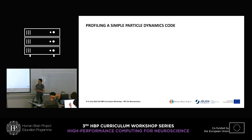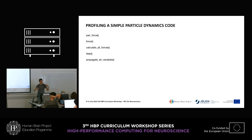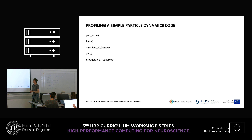Let's look at a brief example. This is a code that simulates some interacting particles — this could be the planets in our solar system, or atoms and electrons in a classical model. We have a bunch of particles and they interact with a pair force: a force that only depends on the two particles we look at, no matter how many other particles are around.